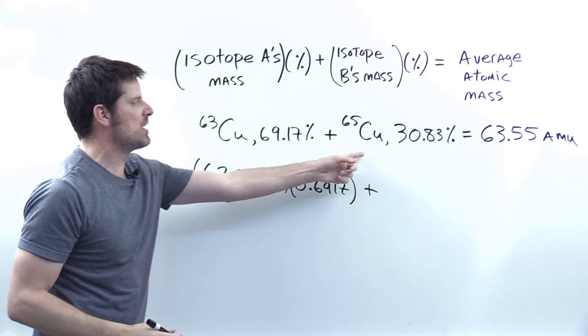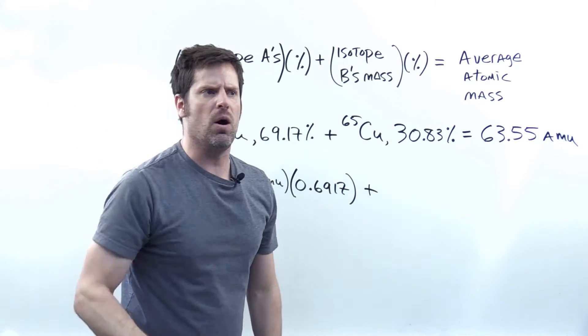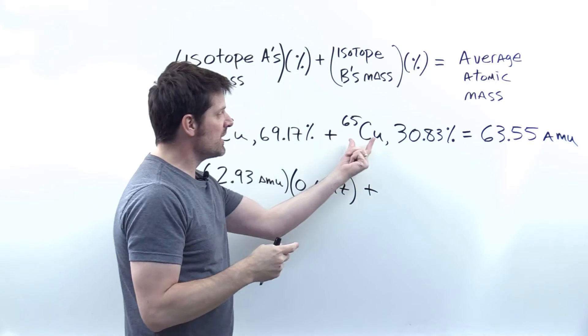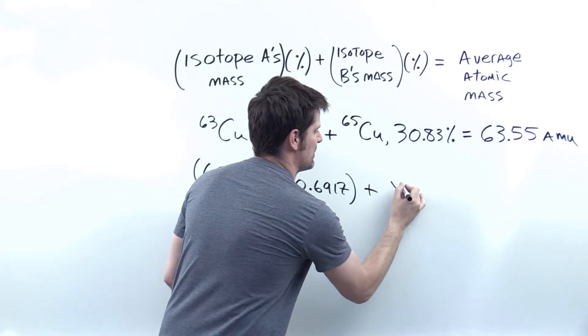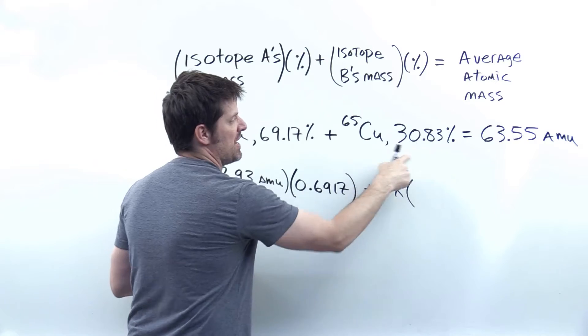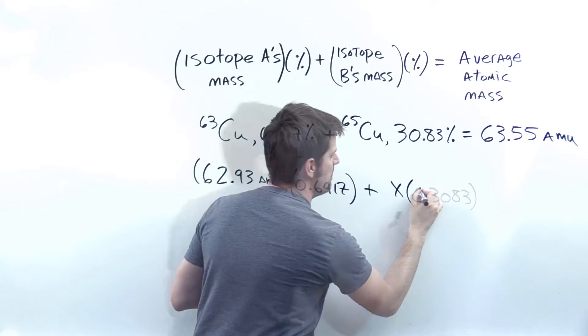I then add that to the mass of my copper 65, which I don't know. In fact, that's what the question is asking. So I'm just going to call that isotope's mass X. If I multiply that X by this in decimal percentage form right there,